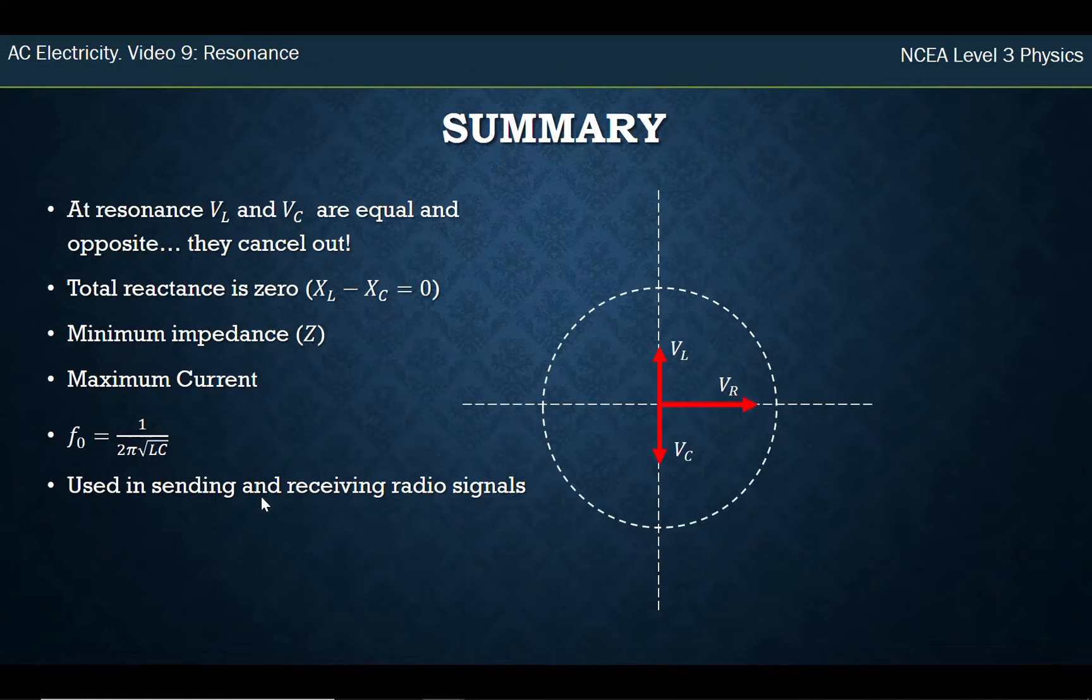So in summary, at this idea of resonance, we have the voltage over the inductor, the voltage over the capacitor are equal and opposite. They cancel out. And similarly, with the impedance triangle, the reactances cancel out. This gives us the minimum impedance we possibly could get and maximizes the current.